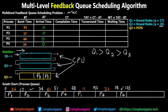CPU now moves to queue three which uses FCFS. It takes P1 first, which requires 11ms. Since it is FCFS, it will not stop until P1 is completed: 125+11=136ms, and P1 is done. The last process is P3 with 26ms remaining. CPU takes P3 and since it uses FCFS it will not stop until the entire 26ms are processed: 136+26=162ms, and P3 is completed. This was the complete Gantt chart showing how the CPU schedules all the processes.